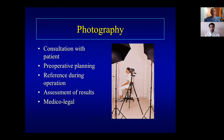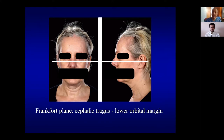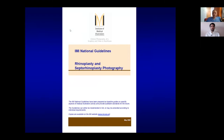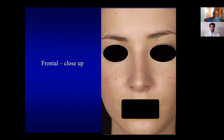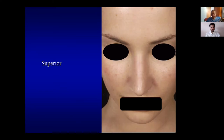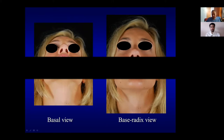You cannot do a rhinoplasty without photographs, just as you cannot do a sinus operation without a CT scan. Photographs should be balanced on the Frankfurt line — from the tragus — ensuring the head is not tilted. Standard views include frontal, right and left lateral, right and left oblique, and basal views. Additional views include close-ups, bird's-eye view, and the base-radix view where you see the whole dorsal and base together — very useful for deviated noses. National guidelines from the Institute of Medical Illustrators are available free online.